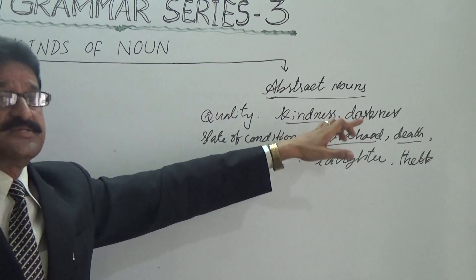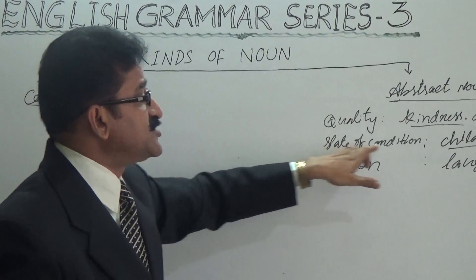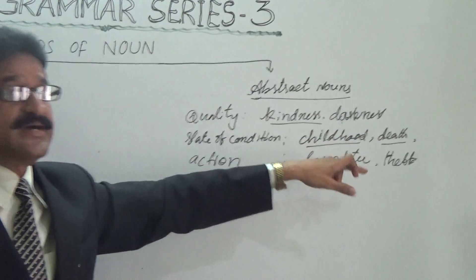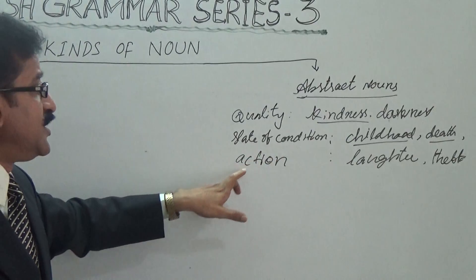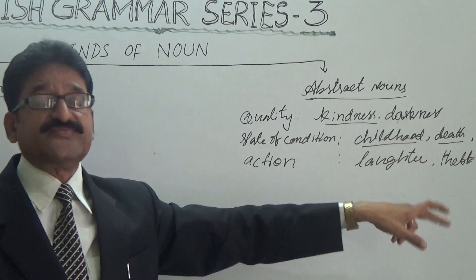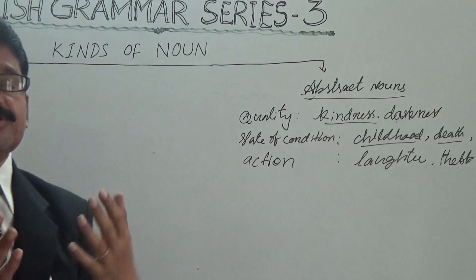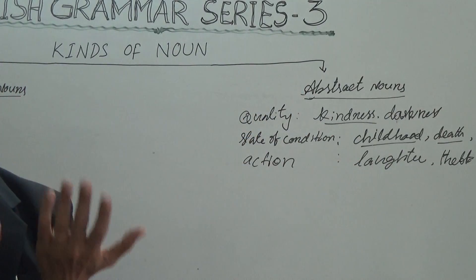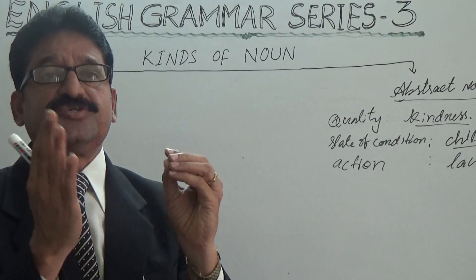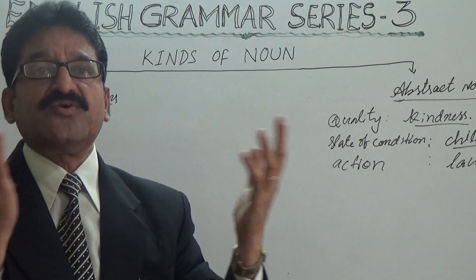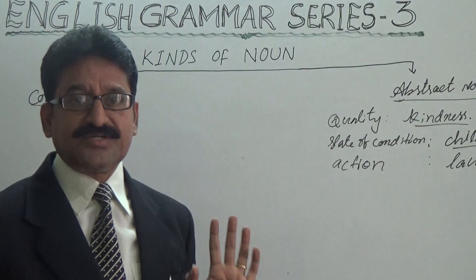Kindness, sympathy — all these are feelings, which are quality. State of condition: childhood, death, youth, old age. And action: laughter, theft. These are the nouns which we can feel and enjoy but cannot see or touch because they don't have physical features. Such kind of nouns are called abstract nouns.